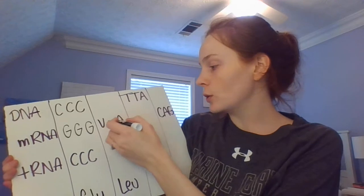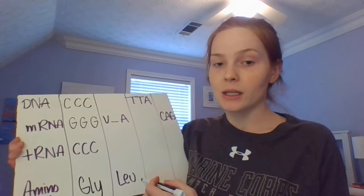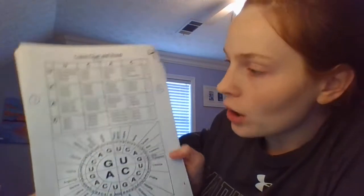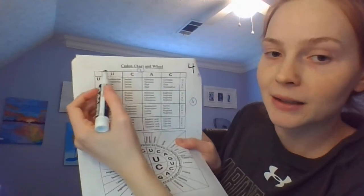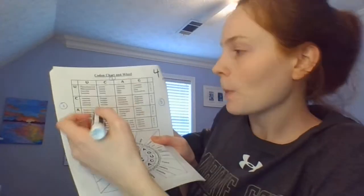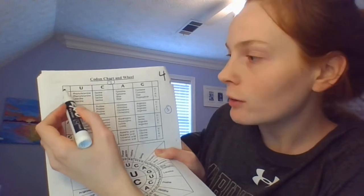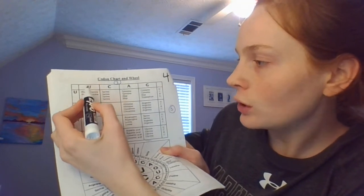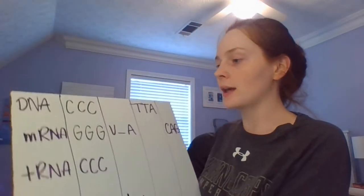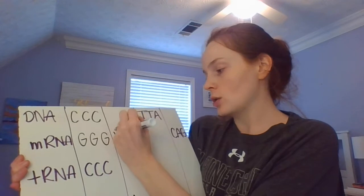Second column: we know that it's U-something-A and the amino acid is leucine, so we're going to have to work back using the codon chart. The first base has to be U, and the only leucine where the first base is U would be UUA and UUG. We have U-blank-A, so we know it is UUA, and that gives you amino acid leucine.